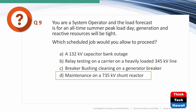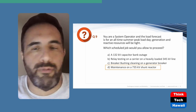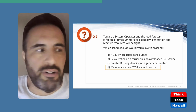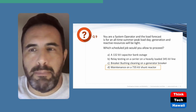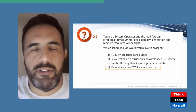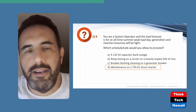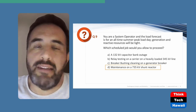Capacitors are normally switched out at night when there's excess voltage — you don't need voltage support during the day, so A is not the answer. Relay testing on a heavily loaded 345 kV line is the last thing you want to do — accidents happen, somebody could bump a cabinet, pick up a relay, and accidentally trip something. Keep your hands in your pockets — no testing at this time. B is not a good answer.